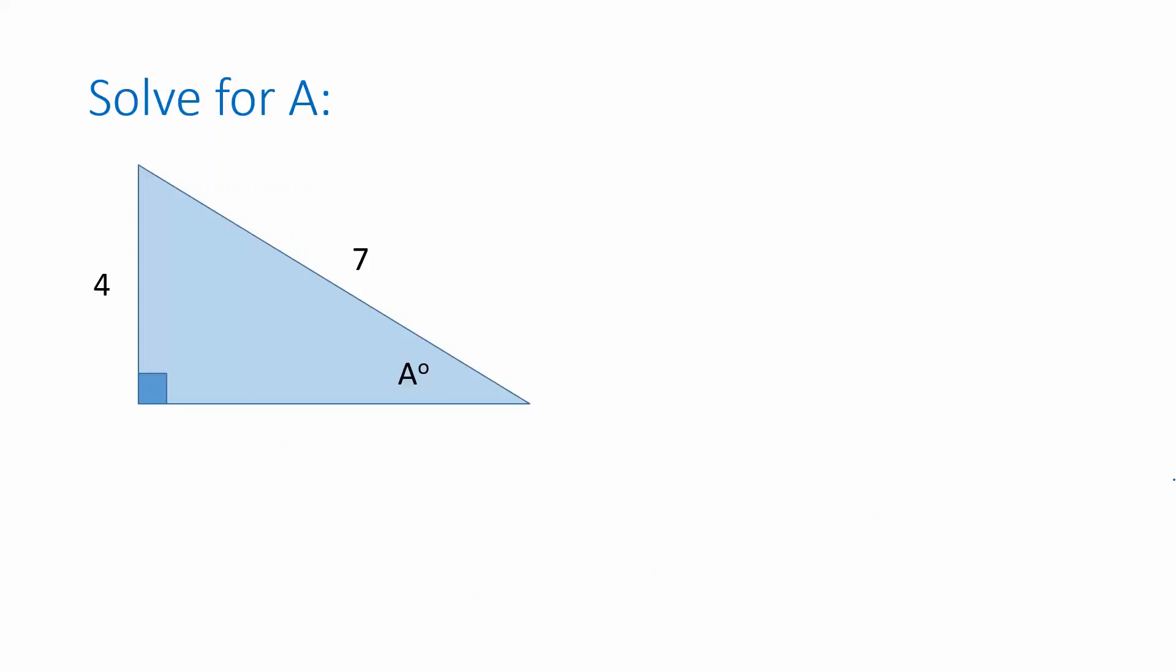Now we're going to start similarly here because the side lengths that are indicated are again the hypotenuse and the side opposite the angle indicated by the symbol A. So sine of A degrees is equal to opposite over hypotenuse, 4 over 7.